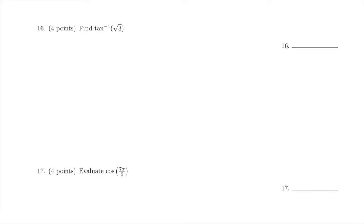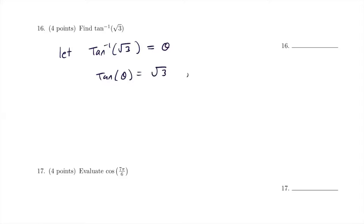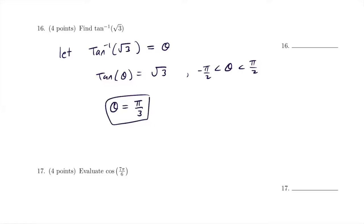For number 16, we want the exact value of arctan(√3). Set this equal to θ, then apply tangent to both sides: tan(θ) = √3. Recall that θ must be between −π/2 and π/2 for inverse tangent. From memory of trigonometry, tan(π/3) = √3, so θ = π/3. That's the answer.